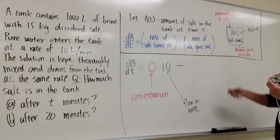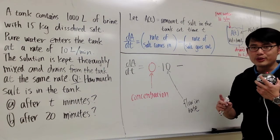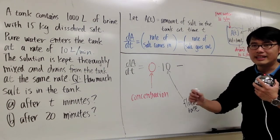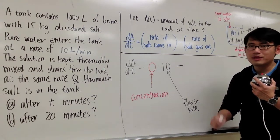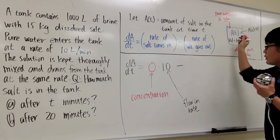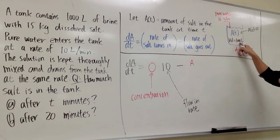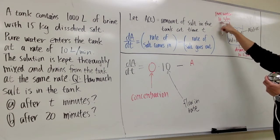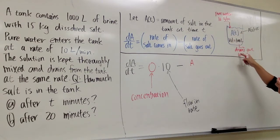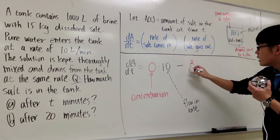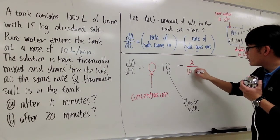How do we do that? Remember, to calculate concentration, we need to know the amount and then we divide the amount by the volume. The amount changes, so I'm just going to label that as A, and we divide it by the volume. The volume doesn't change. It's always 1,000 because we have 10 liters per minute of water goes in and it also drains out 10 liters per minute of the solutions.